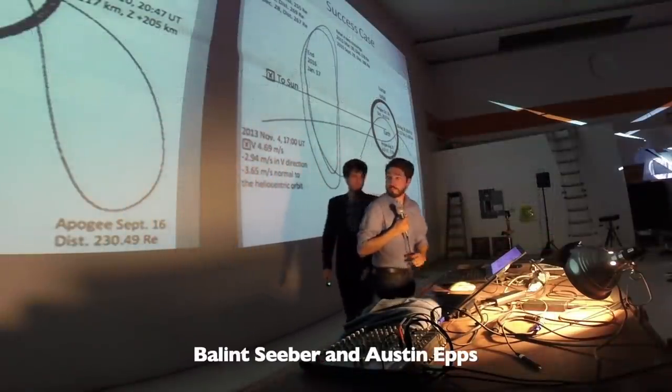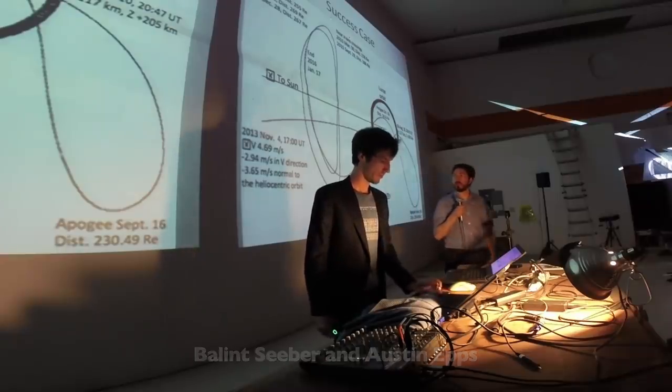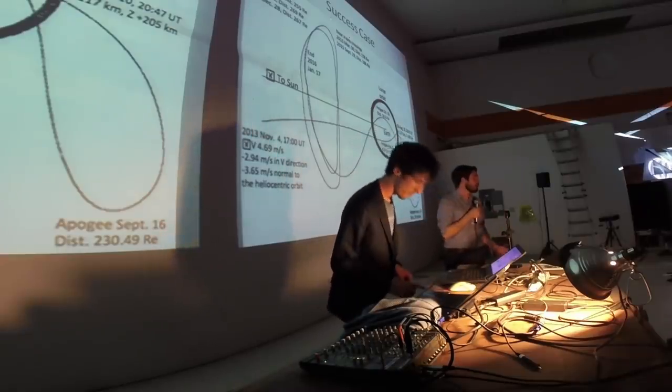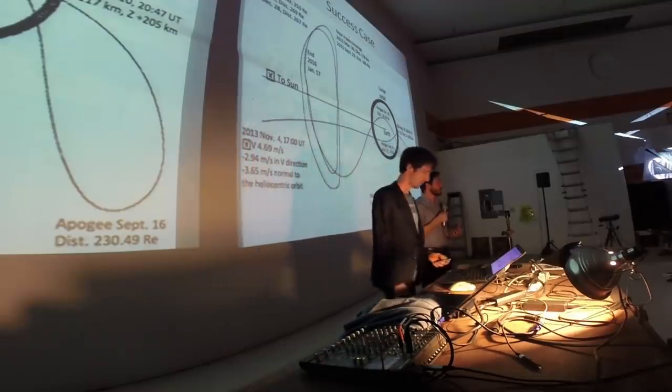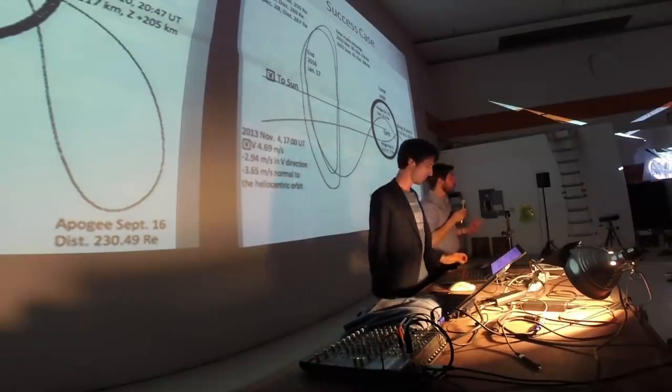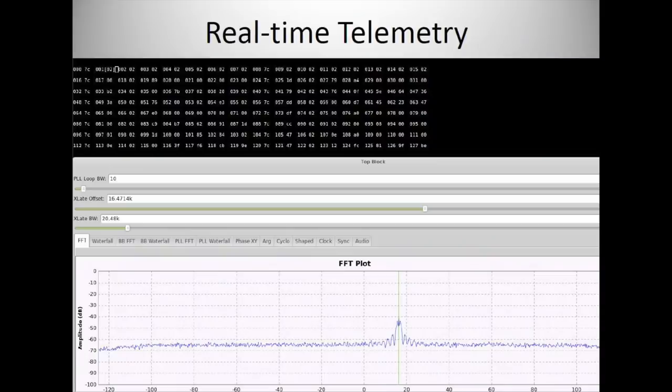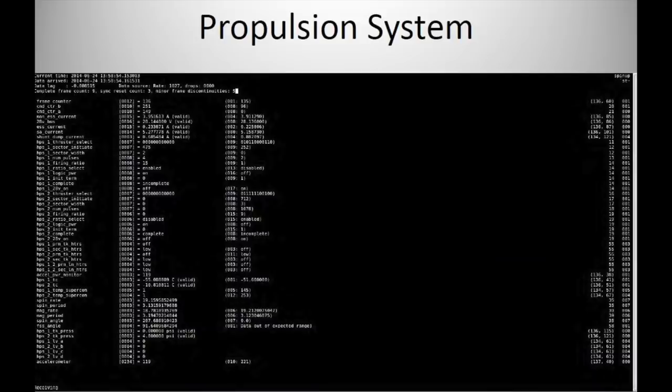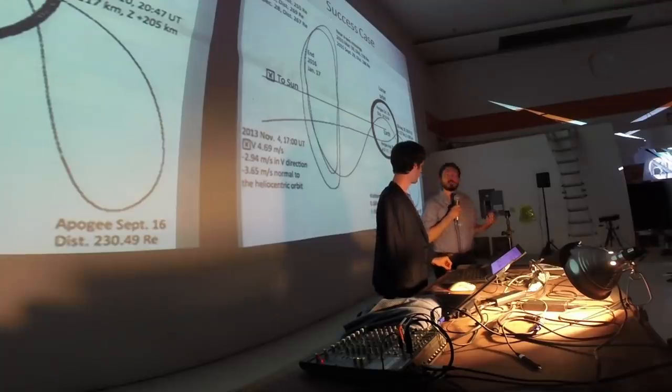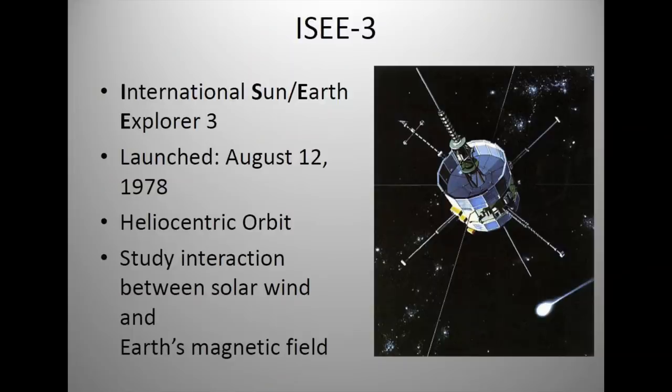And right on cue, that's when we got contacted by Balint Sieber and Austin Epps. They had seen our videos and dropped us an email. They casually mentioned that they had done an entire S-band SDR stack to reconnect to a forgotten NASA satellite, launched in the 1970s, and that was coming back close to Earth. Then they simply connected their SDR hardware to the Arecibo antenna in 2014, successfully acquired and woke up the spacecraft, and executed commands to fire its thruster for a capture burn. They are local and willing to help us. What? What just happened? Say again? What is it you did? So let's take it step by step slowly.